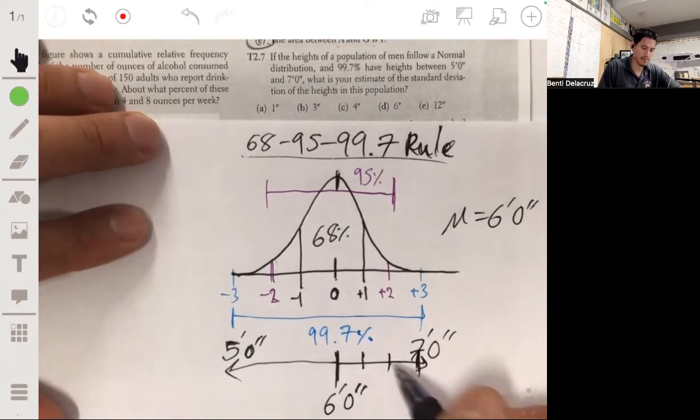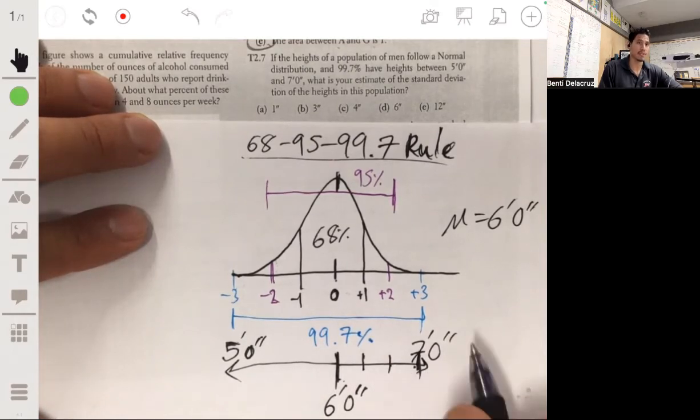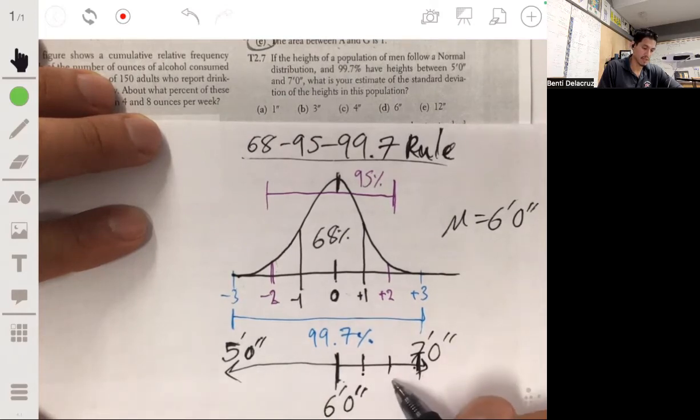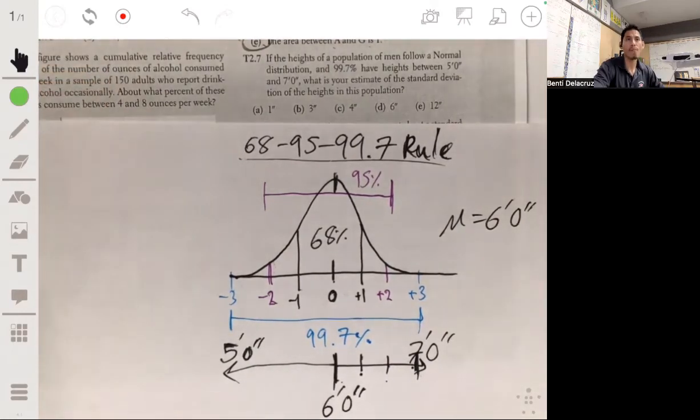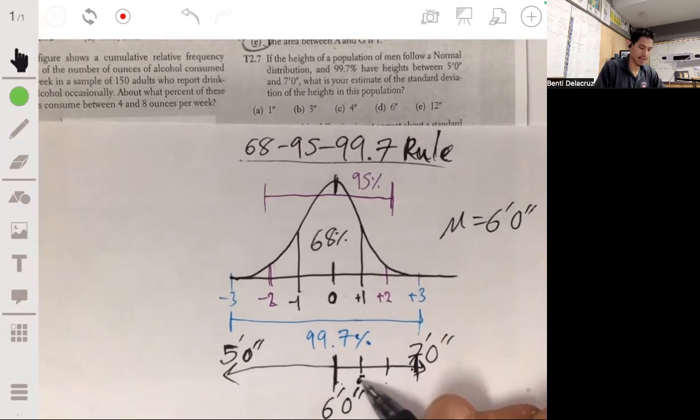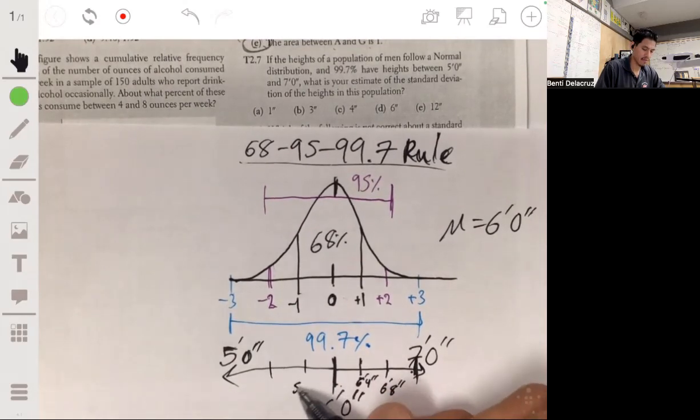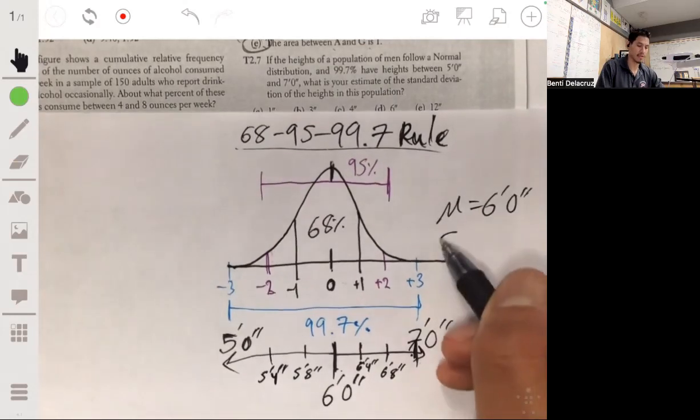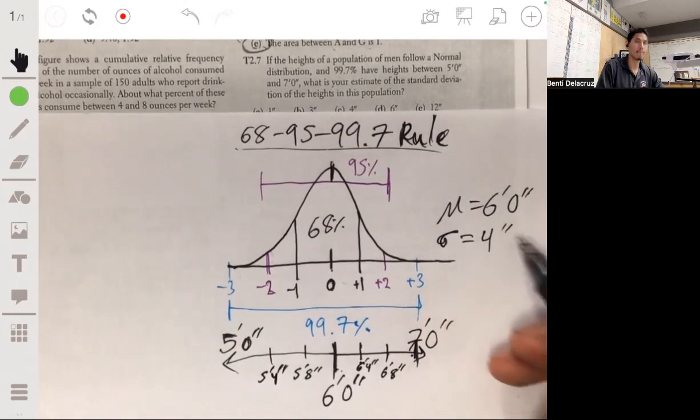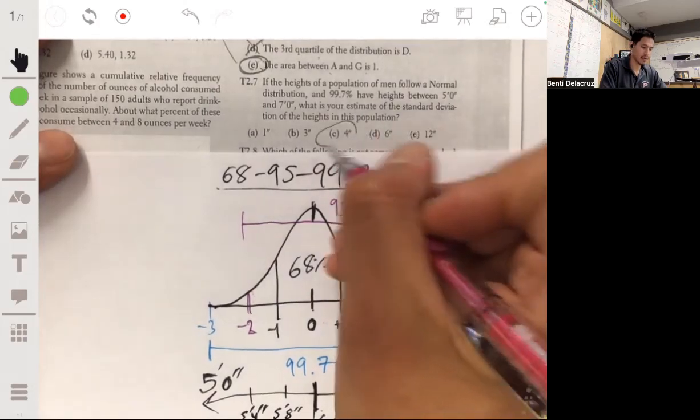And then from there, you can figure out what the standard deviation value would be because from six feet to seven feet are three standard deviations: one, two, and three. So six feet to seven feet, that's 12 inches. So then 12 inches divided by three is four inches. So this would be six foot four, six foot eight, and that would be seven feet. And it's really that simple. So the standard deviation would have to be four inches for this to work. And so your answer would be C.